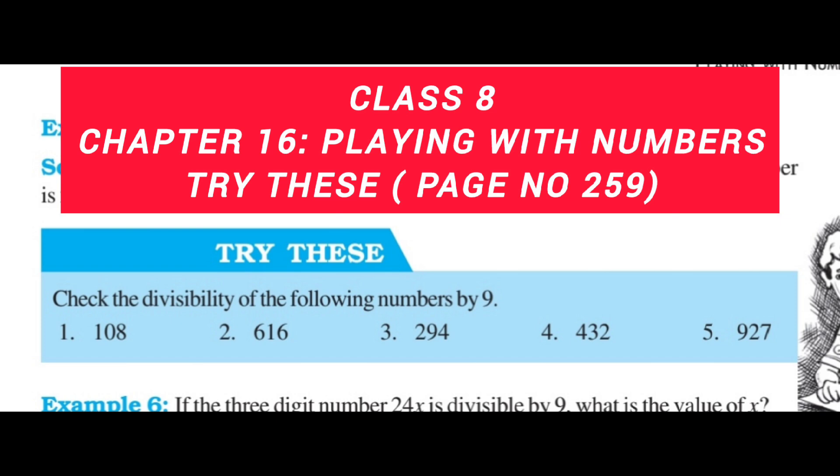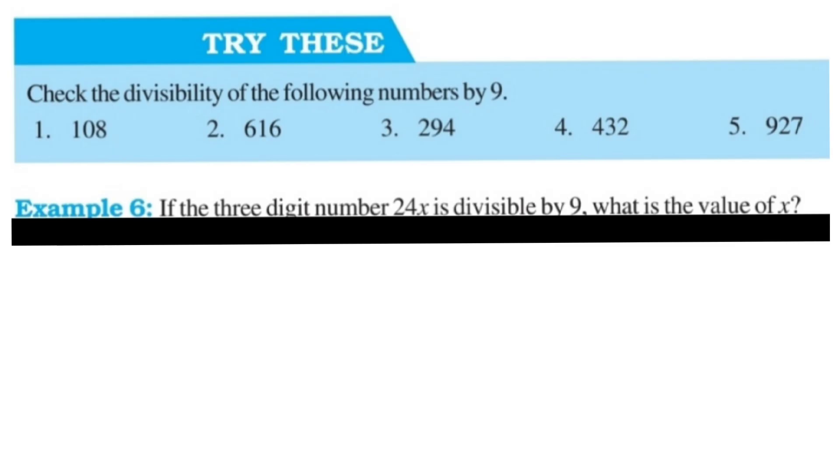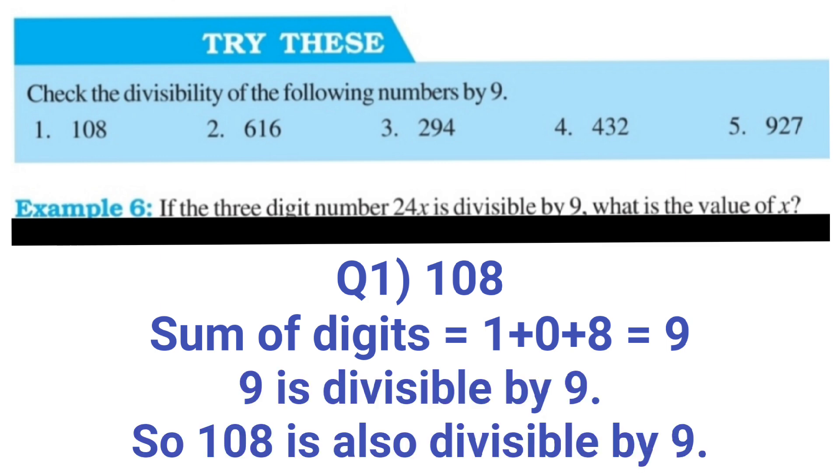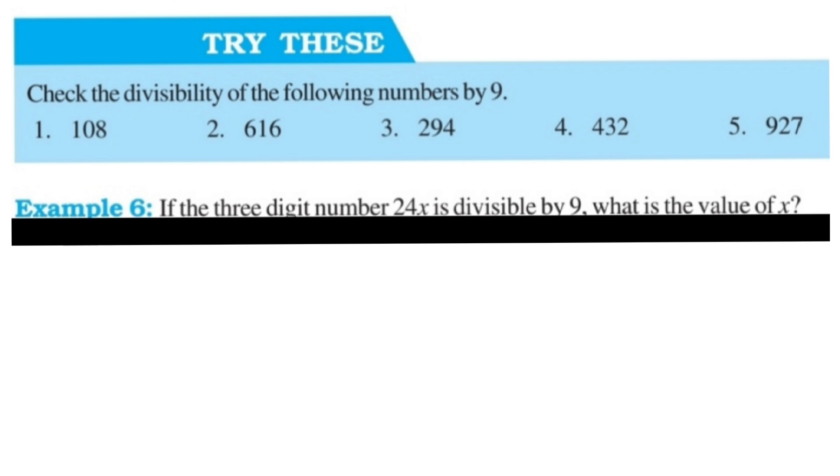Let's solve one by one. First of all, first part 108. 108, now make the sum of digits 1 plus 0 plus 8, it is 9 and 9 is divisible by 9 because 9 ones are 9. So 108 is also divisible by 9. So we can write yes, 108 is divisible by 9.